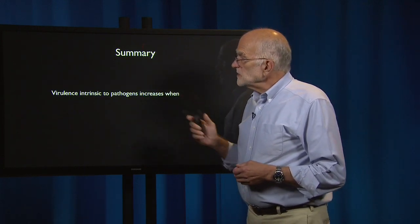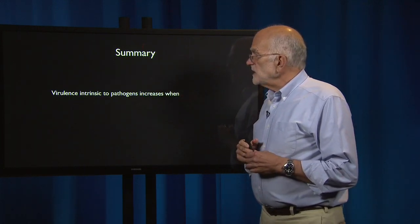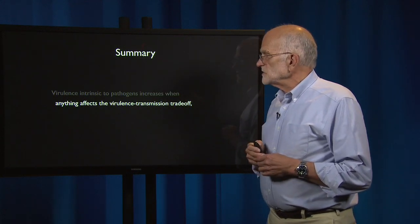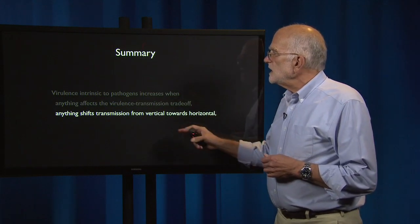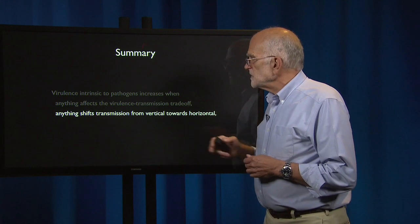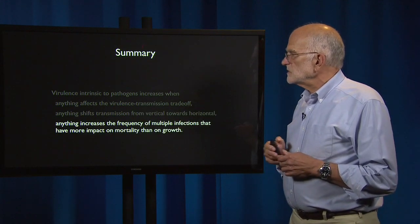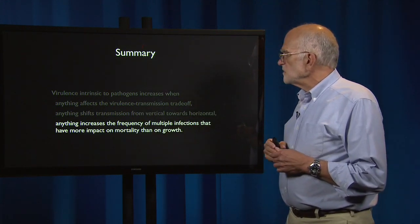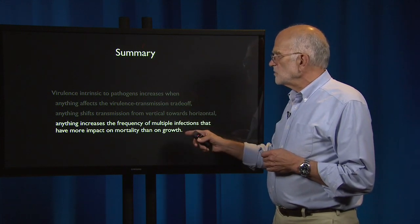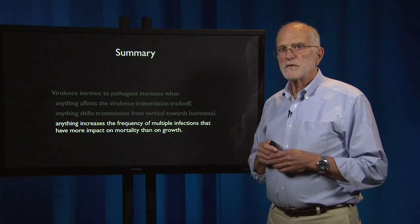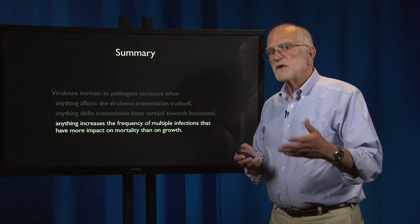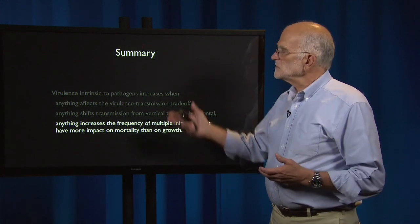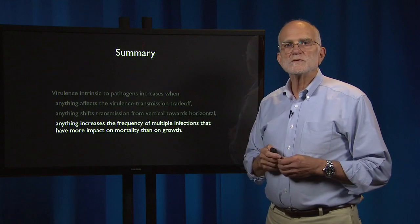To summarize, virulence intrinsic to pathogens increases when anything affects the virulence-transmission trade-off, anything shifts transmission from vertical to horizontal, or anything increases the frequency of multiple infections that have more impact on mortality than on growth. Virulence is a characteristic of pathogens that can evolve in response to these sorts of conditions.